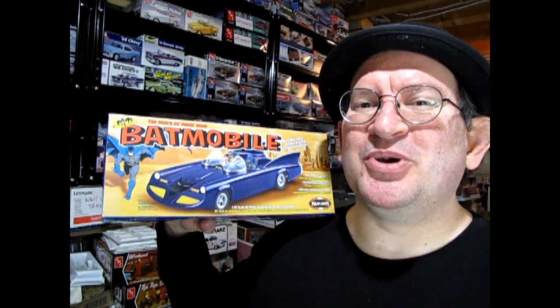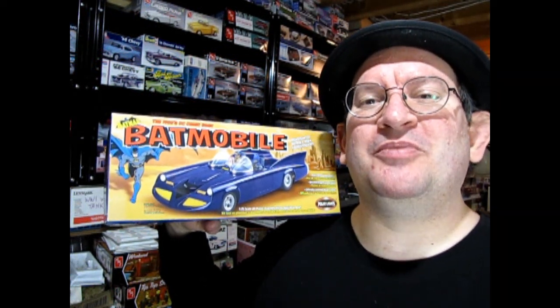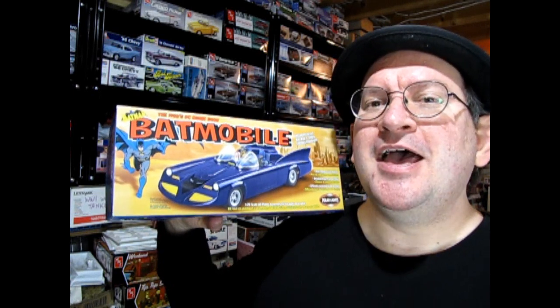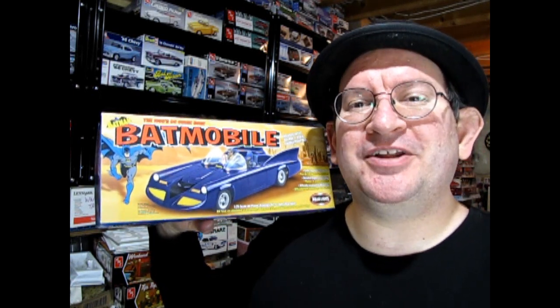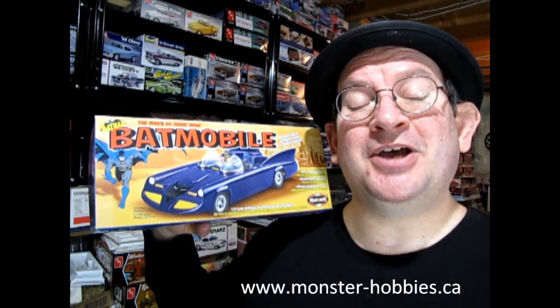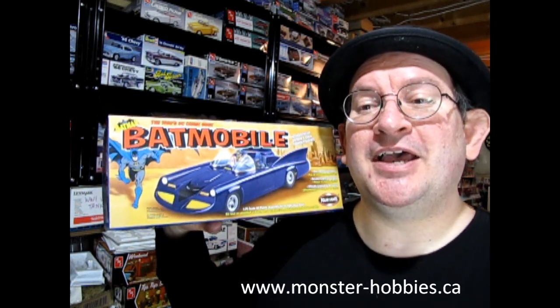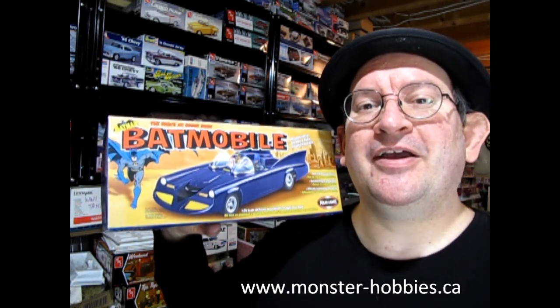Well, I hope you enjoyed that look at our 1960s DC comic book Batmobile by Polar Lights. And if you want to see what great model kits we have for sale, don't forget to check us out at www.monster-hobbies.ca. We've got TV, movie cars, and other great things down there. So, until next time, everybody, happy model building, and we'll see you in the next video.